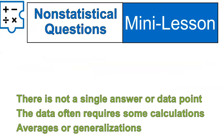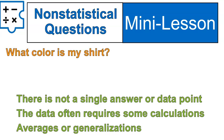Here are some examples of non-statistical questions. What color is my shirt? You could look at my shirt and tell exactly what color it is. So there's no kind of data gathering needed. You don't need to find any averages. There's no calculations required. It's just a single data point.